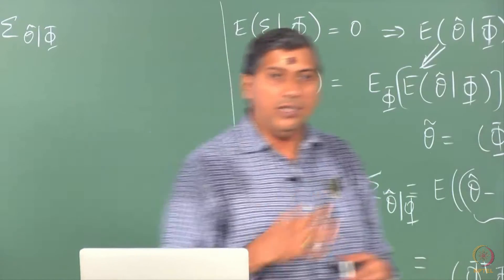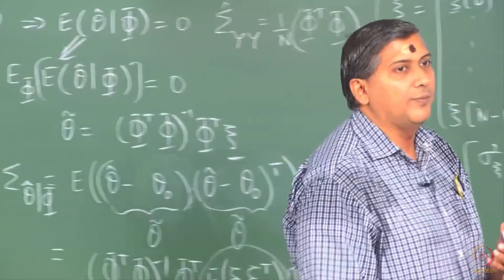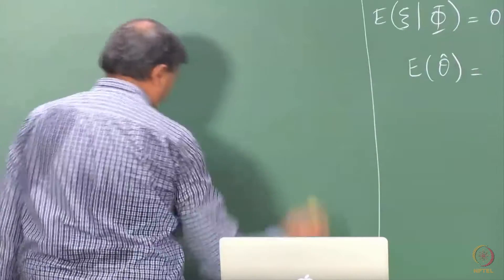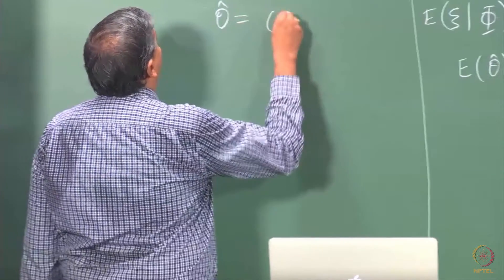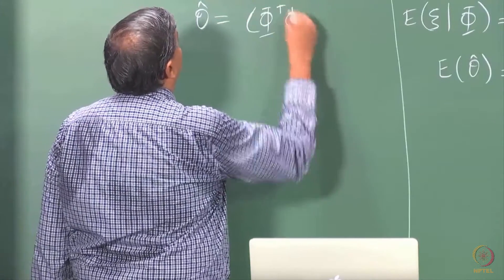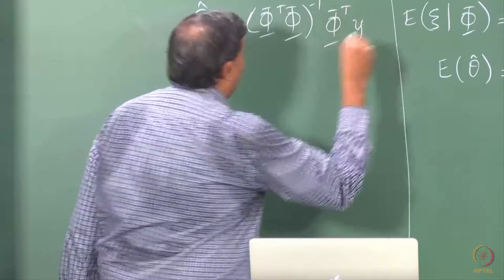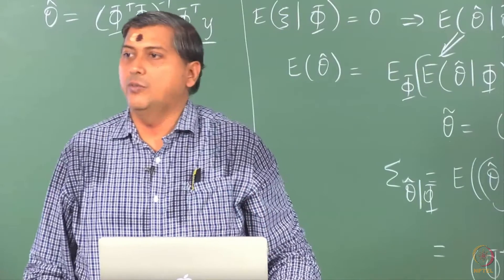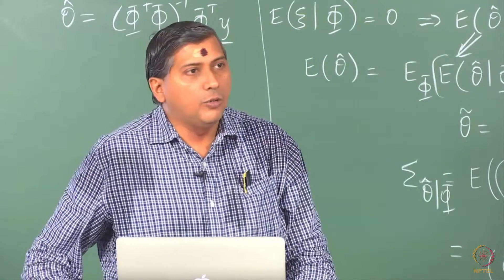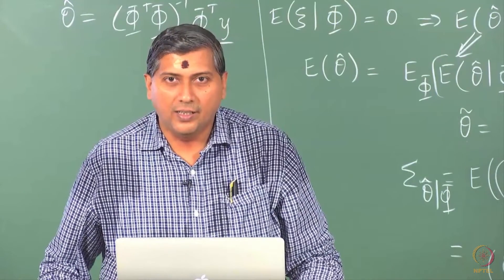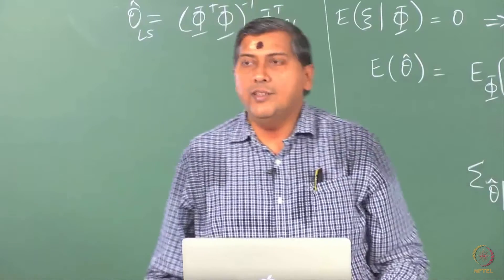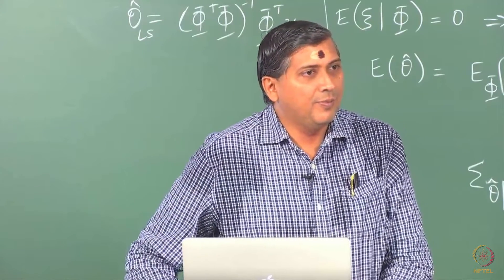So finally we come to the distribution which will allow us to construct confidence region. One of the things that you should notice in the expression for theta hat - let me write the expression here for you again. The OLS result, theta hat is phi transpose phi inverse phi transpose y. Assume for a moment that phi is deterministic. Just assume that phi is frozen. Then straight away this tells you that theta hat is a linear estimator. Let me write this for you, emphasize that the least squares estimator is a linear estimator.